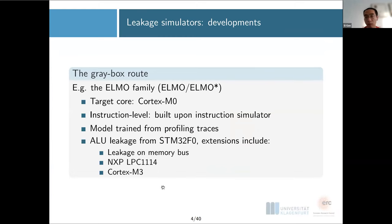One is going with the gray box route. As a representative, the ELMO family will target protection on Cortex-M0 and will always build on this instruction simulator called Thumbulator. It will train its leakage model from the profiling traces, lots of traces actually measured from the Cortex-M0. The leakage model will actually focus on the ALU leakage.